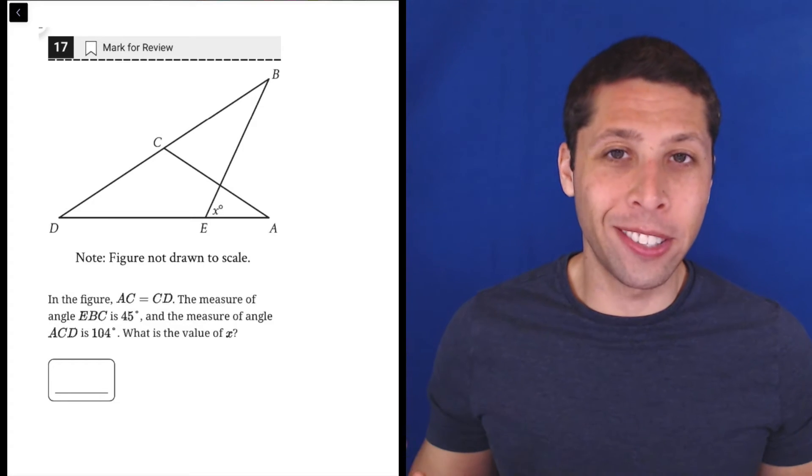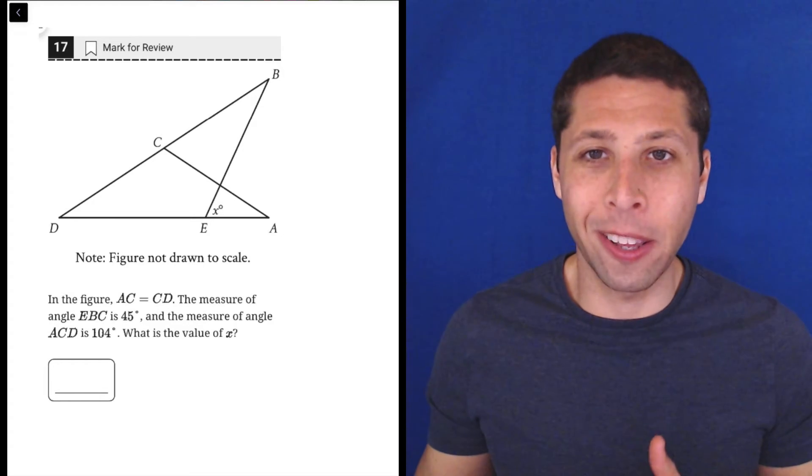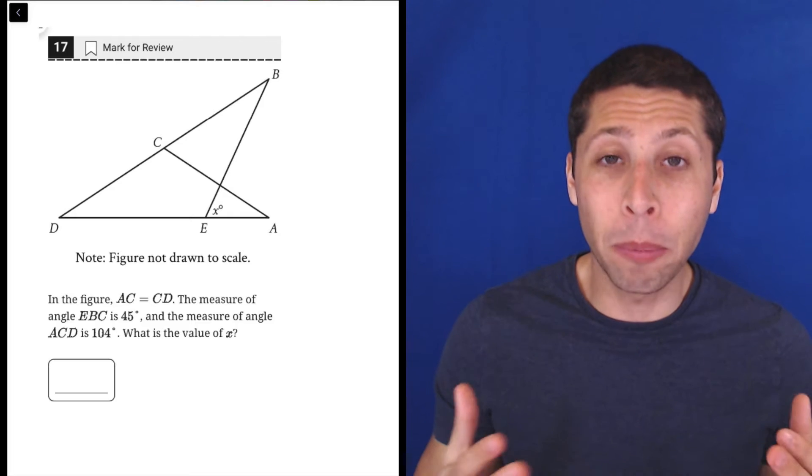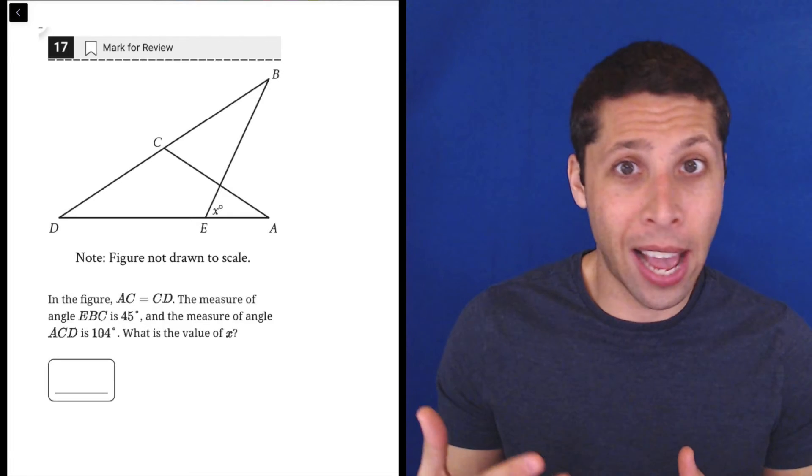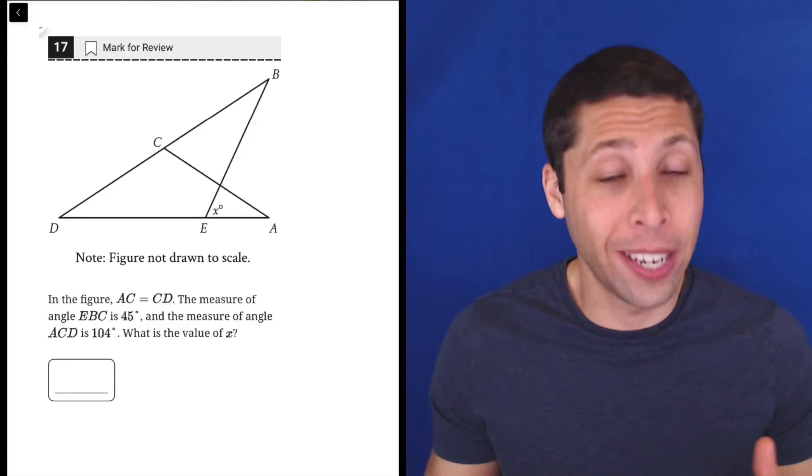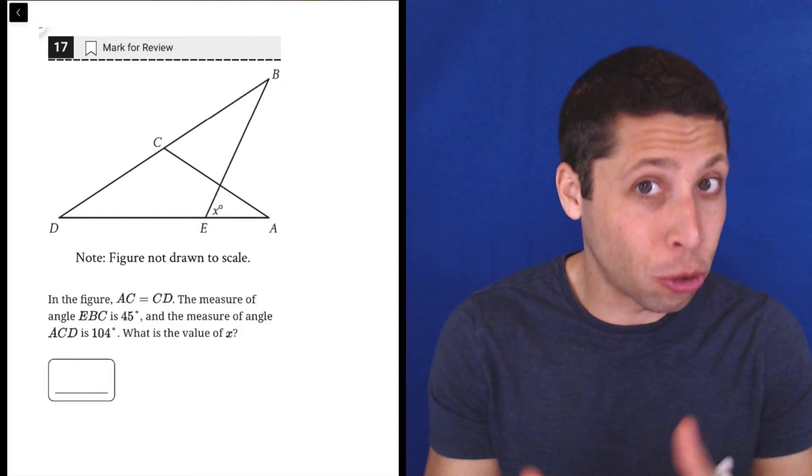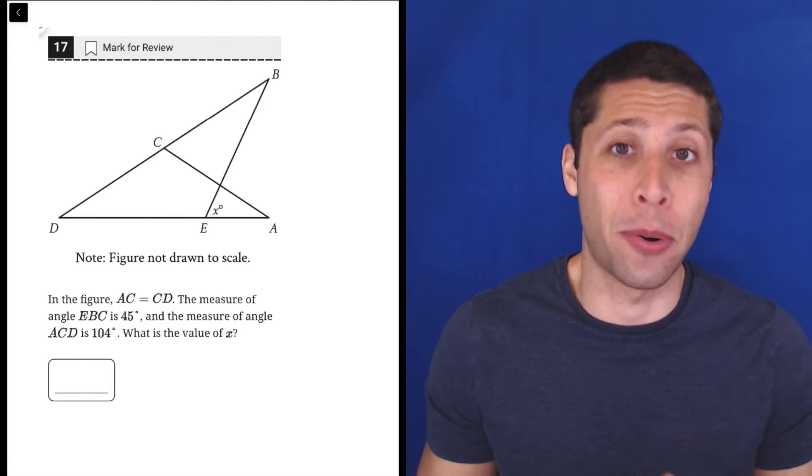Now, the hardest thing about this question is you're not able to draw on the picture like I'm about to. On the real Blue Book test, you're going to have the ability to cross out answer choices, but you're not going to be able to draw on the picture itself. You will have scrap paper though.